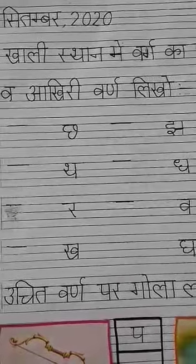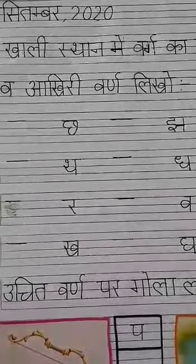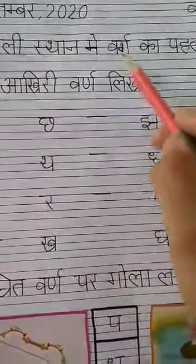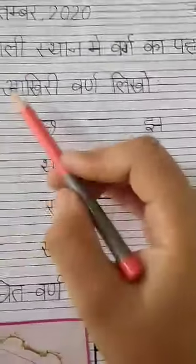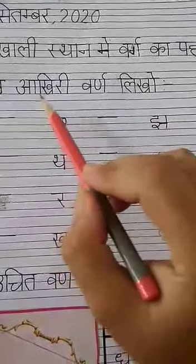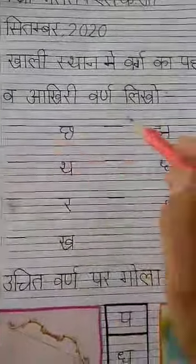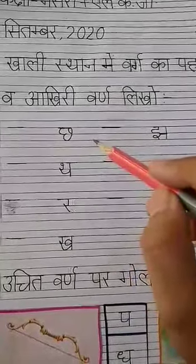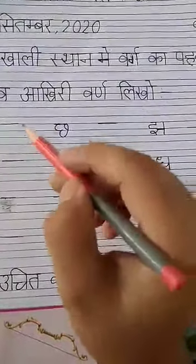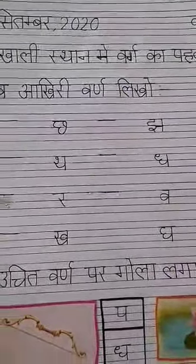A very cheerful morning to all royal stars. Let's start our Hindi work. Today we will do this activity. In this activity we will write the third and last letter in the line of the blank space. So let's start.